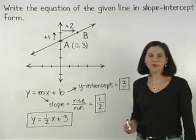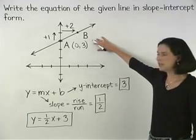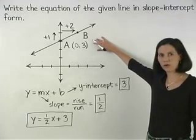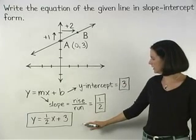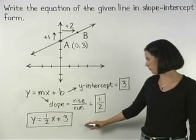So the equation of the given line in slope-intercept form is y equals one-half x plus 3.